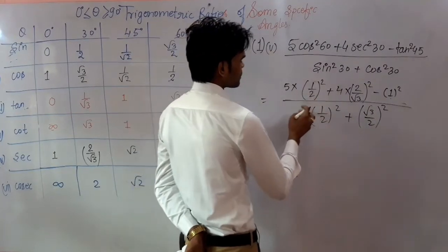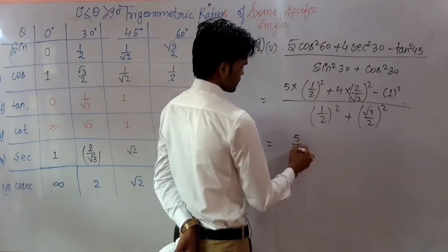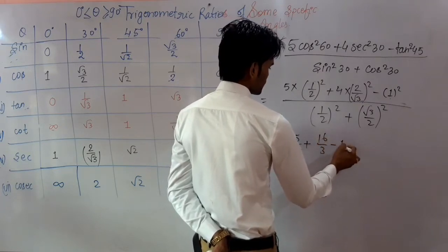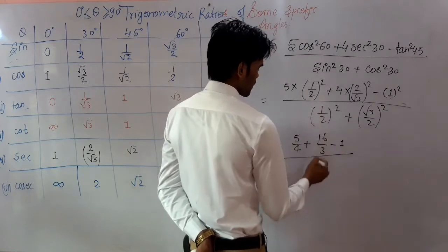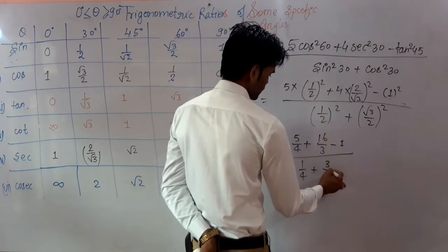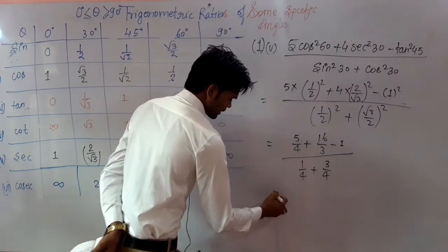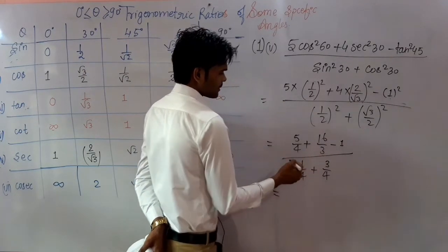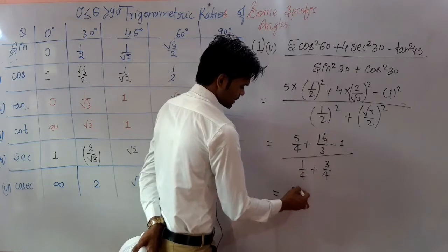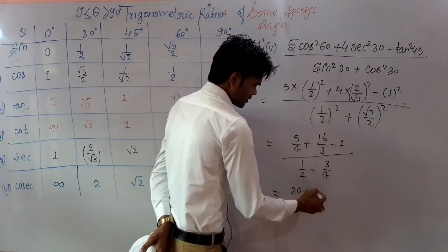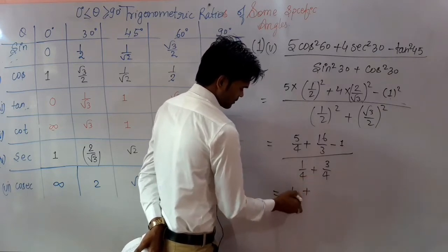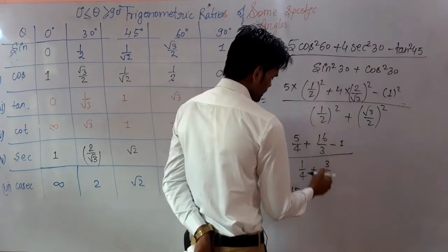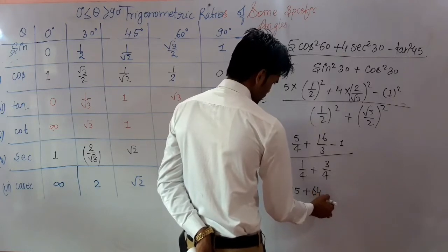This gives you sin²30 equal to 5/4, plus 16/3, minus 1, upon 1/4 plus 3/4. Taking the LCM, you can solve it. It will give 15/12 plus... working through to get 4 plus 15 using LCM: 36/4 means 1/2, equal to 16/4.